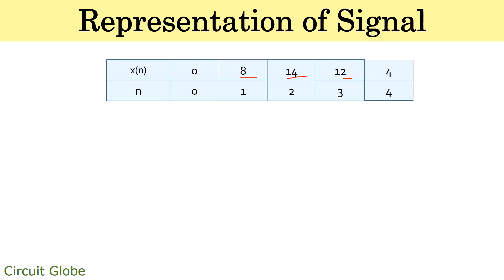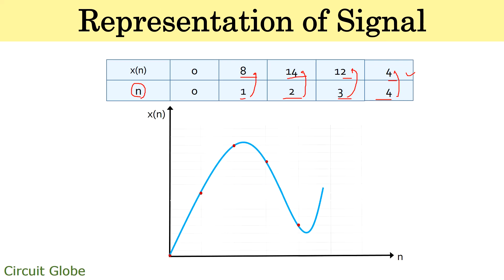The share values are 8, 14, 12, and 4 on four consecutive days represented by variable n = 1, 2, 3, and 4. This string of numbers corresponds to a signal, and each respective value is a function of n, that is the number of days. On the first day the value is 8, on the second day it is 14, on the third day it is 12, and on the fourth day it is 4.